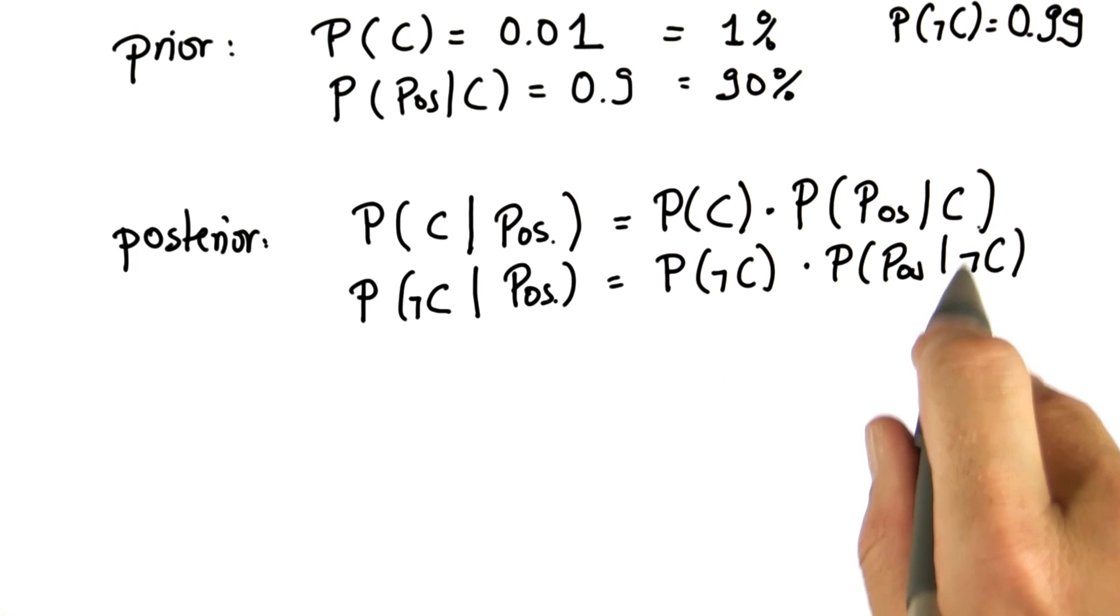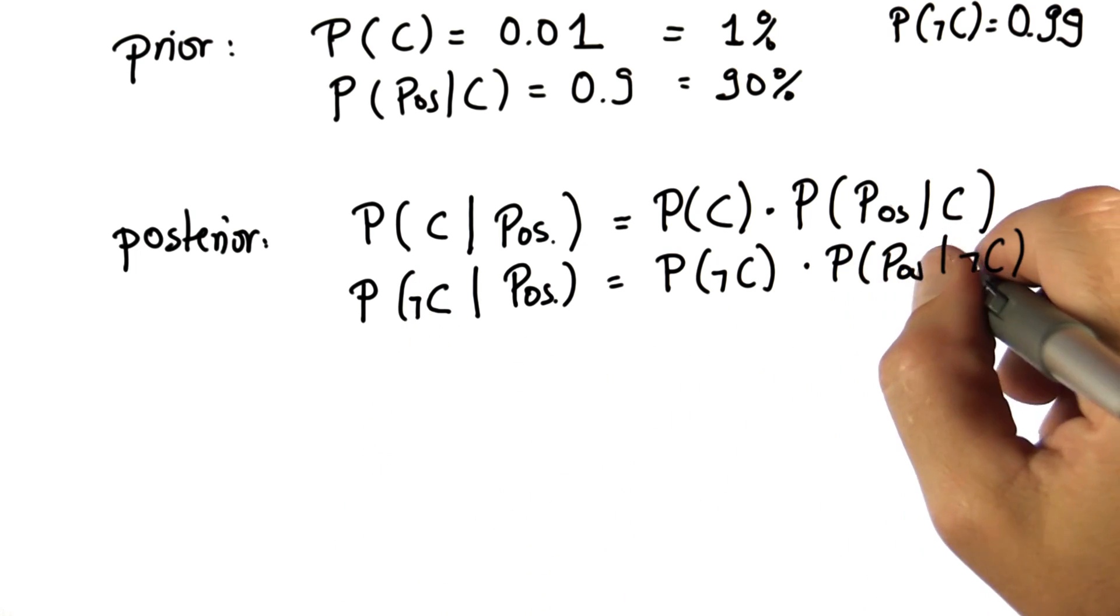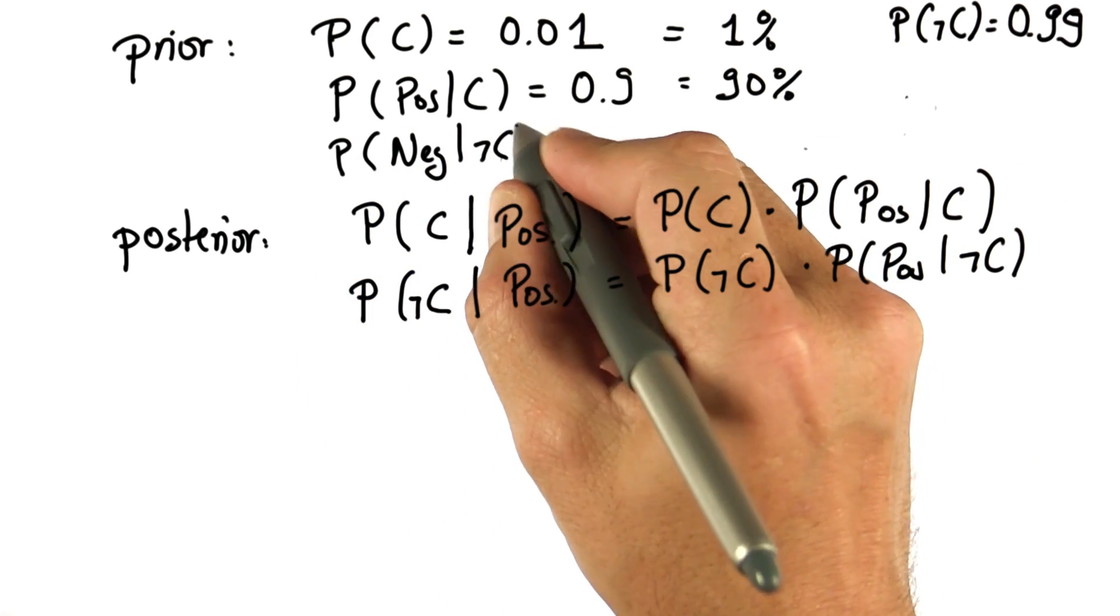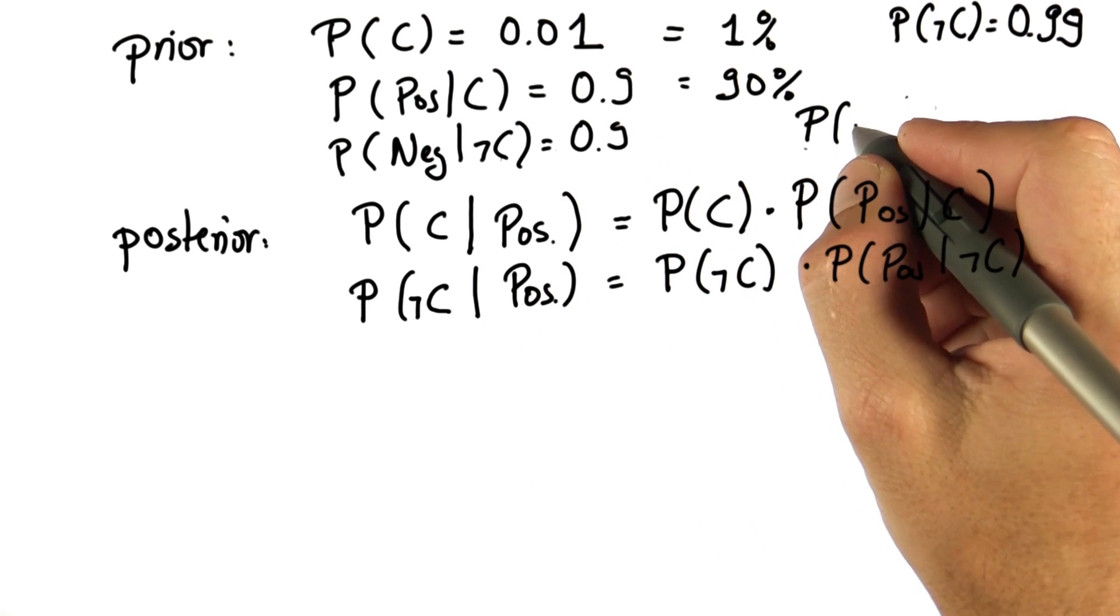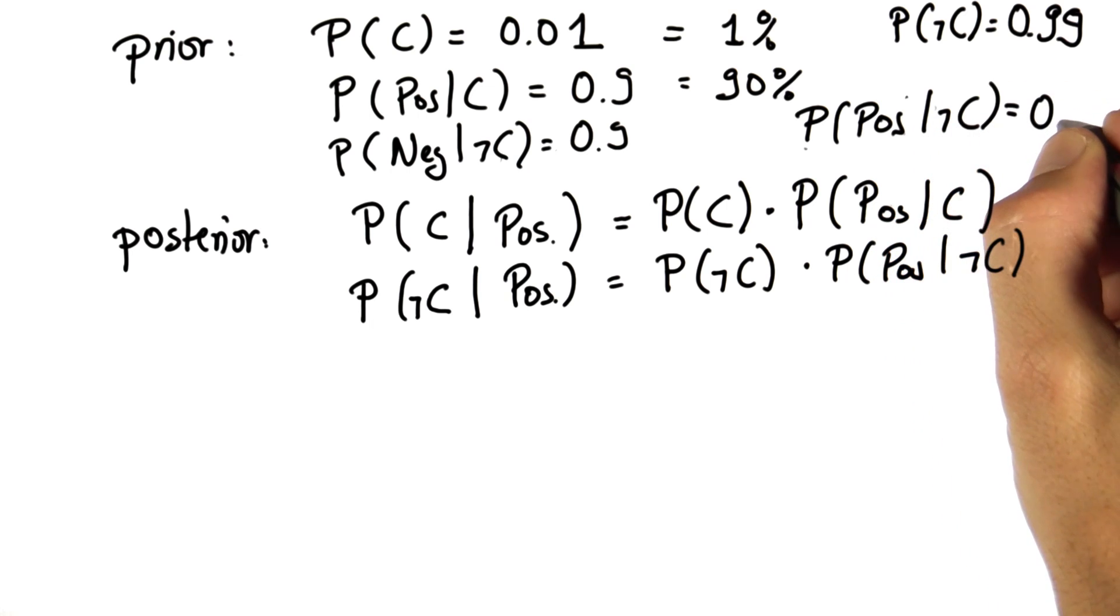Realize these two equations are the same, but I exchanged C for not C. And this one over here takes a moment to compute. We know that our test gives us a negative result if we're cancer-free with 0.9 chance. And as a result, it gives us a positive result in the cancer-free case with 10% chance.